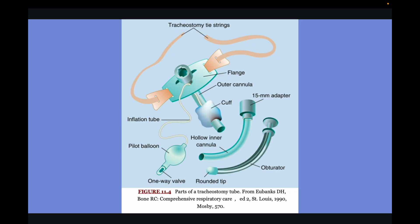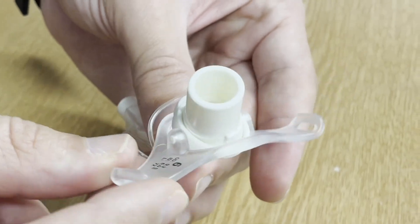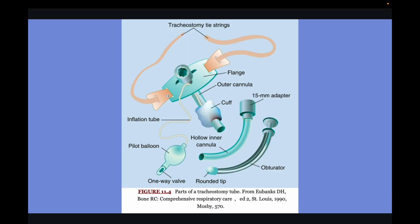Let's look at the parts of a tracheostomy one by one. Here is the flange — the part visible outside the patient's neck, used to secure the tracheostomy with a tie. The flange is movable, allowing the patient to move right and left. The outer cannula goes into the patient and has a cuff — a balloon — that can be inflated with air using the inflation tube and valve.